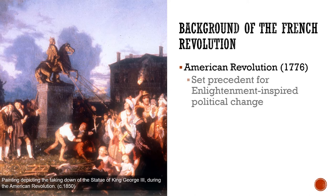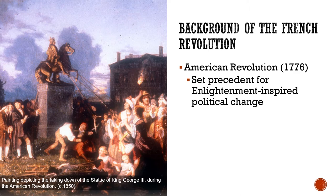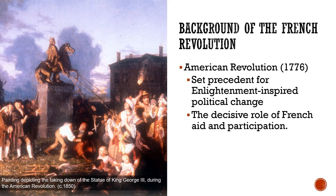The American Revolution really did set the precedent that Enlightenment-inspired political change was real, that it could move from simply being something people talked about in coffee shops to something affecting real change. The American Revolution was when the 13 colonies of Great Britain rebelled against their mother country and secured their independence, creating the first modern democratic nation, the United States of America. Ironically, one of the reasons they were able to do it was because of the support of the French monarchy, and that American Revolution would inspire the French Revolution. One Enlightenment revolution led to another.